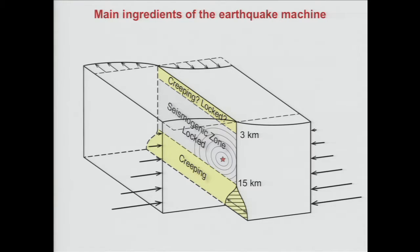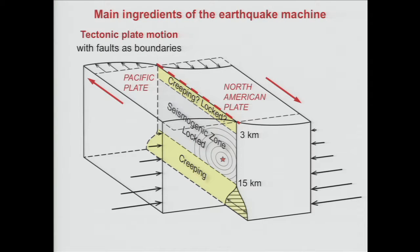Here we have a schematic cutout from that thin shell of the Earth's crust. The obvious ingredient is the plate motion. One plate is represented by this block belonging to the Pacific plate, and the other block belongs to the North American plate. They try to move in opposite directions and are stuck on this plate boundary, which we call a fault.